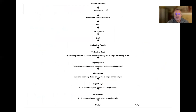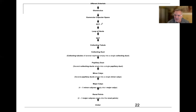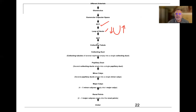Let's review the full flow: afferent arteriole comes off the cortical radiate artery into the glomerulus, into the glomerular capsular space — Bowman's capsule. Then proximal convoluted tubule, then the loop of Henle with a thick descending limb and thin ascending limb, then the distal convoluted tubule leading into the collecting tubule and eventually the collecting duct. From the collecting duct into the papillary duct, minor calyx, major calyx, renal pelvis, and ureter.